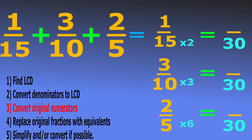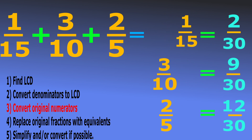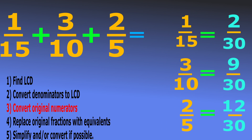Step 3: we convert our numerators appropriately. To keep the value of the fractions the same: we multiplied denominator 15 by 2, so we multiply numerator 1 by 2; we multiplied denominator 10 by 3, so we multiply numerator 3 by 3; we multiplied denominator 5 by 6, so we multiply numerator 2 by 6. So 1 over 15 is equivalent to 2 over 30, 3 over 10 is equivalent to 9 over 30, and 2 over 5 is equivalent to 12 over 30.